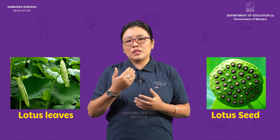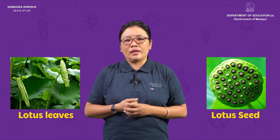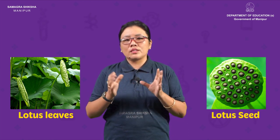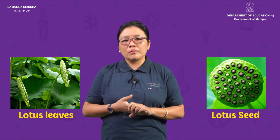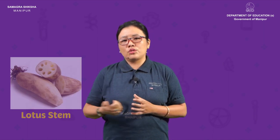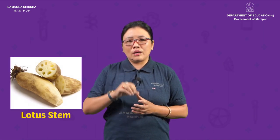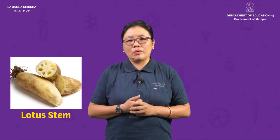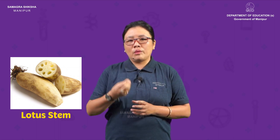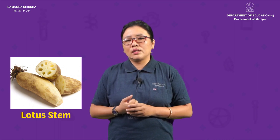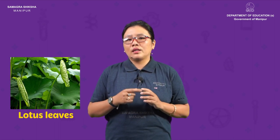The lotus has a lot of vitamins. You can get seeds from it. The lotus also has roots and stems. Lotus stem, if you have a lot of stem, it is the root. You can have lotus leaves, seeds, and roots — all are useful.